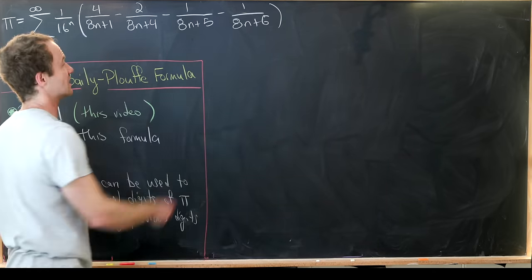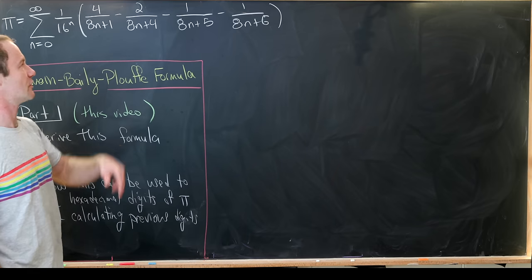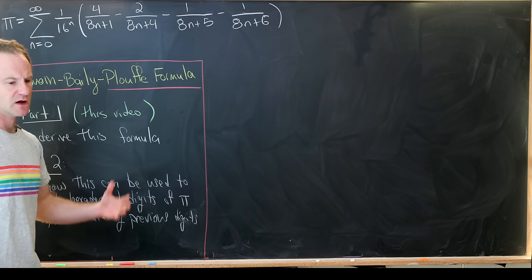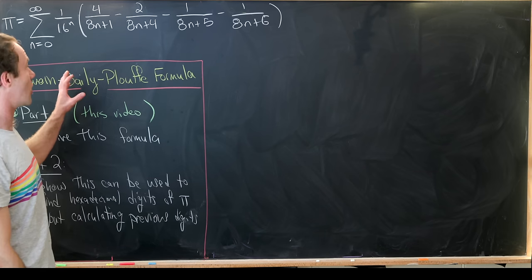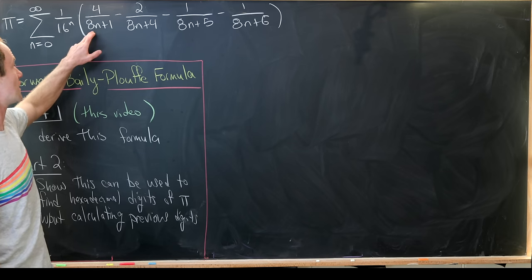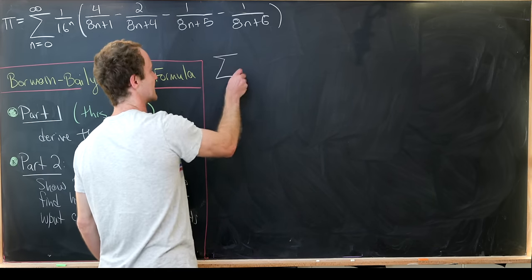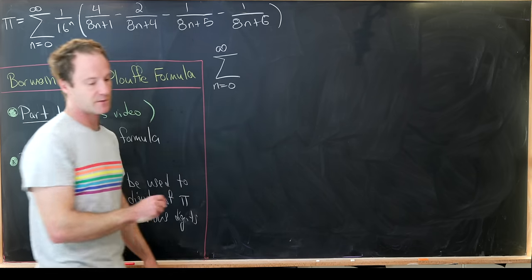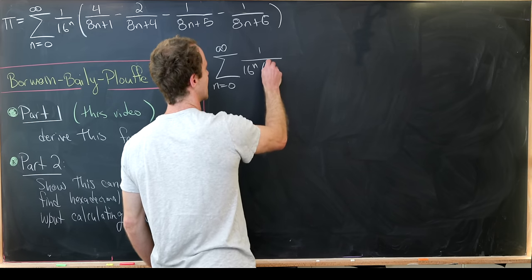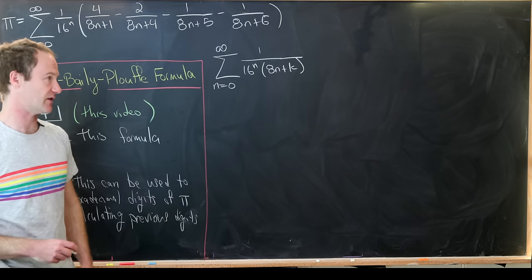And then we've got this sum of four objects: 4 over 8n plus 1, minus 2 over 8n plus 4, minus 1 over 8n plus 5, and minus 1 over 8n plus 6. These all look like 1 over 16 to the n times something over 8n plus something else, so it'll be useful to look at something like that in general. We're going to look at the sum as n goes from 0 to infinity of 1 over 16 to the n times 1 over 8n plus k, where k takes on different values.